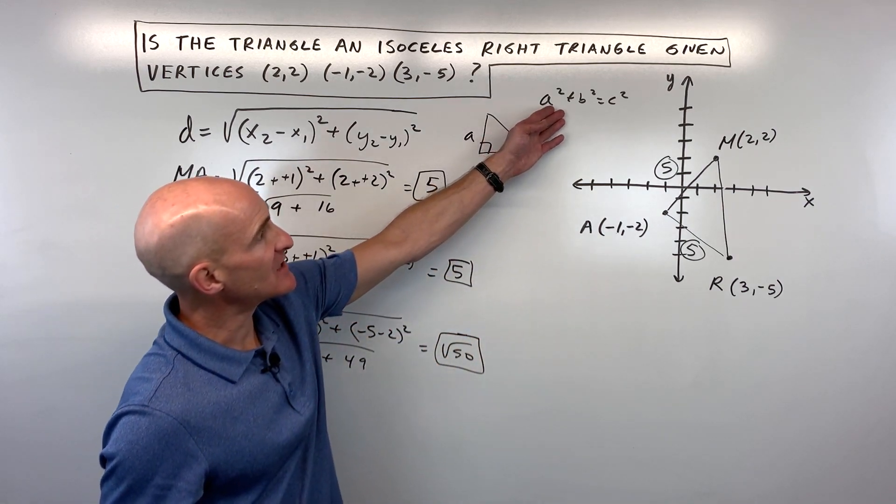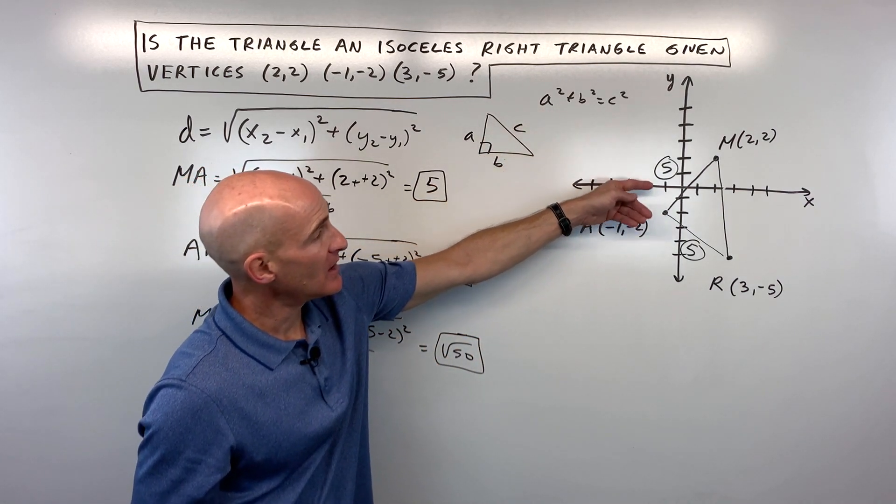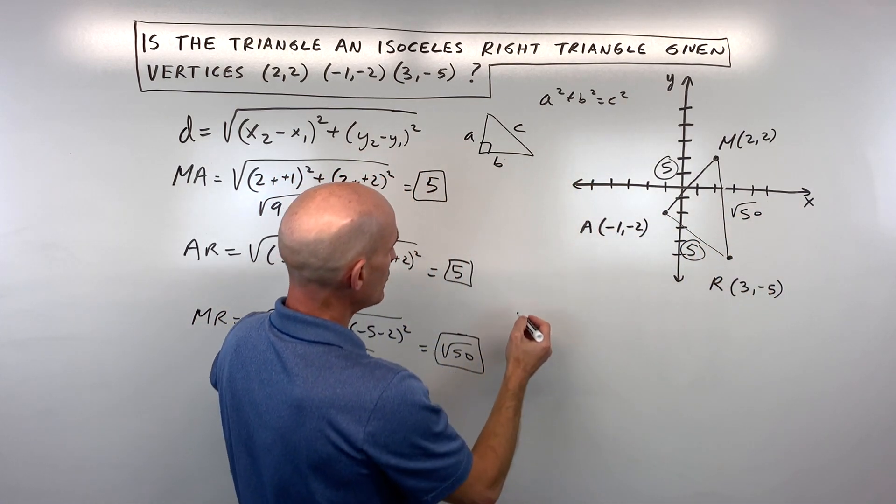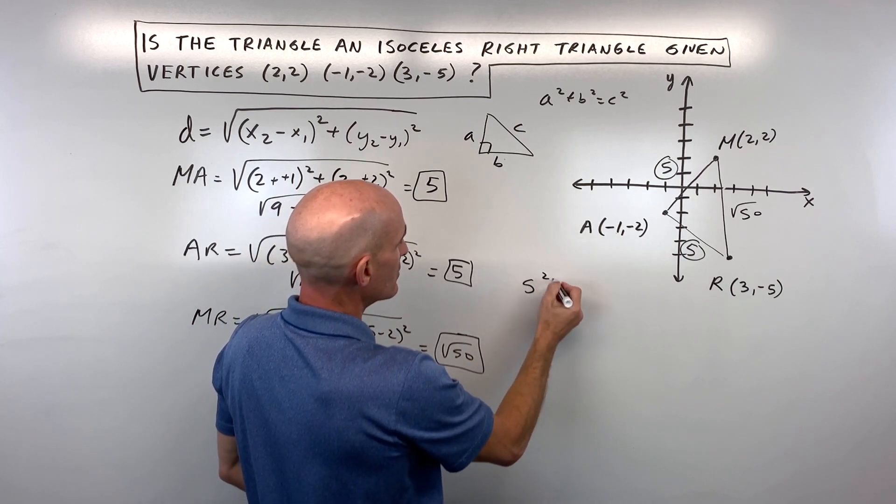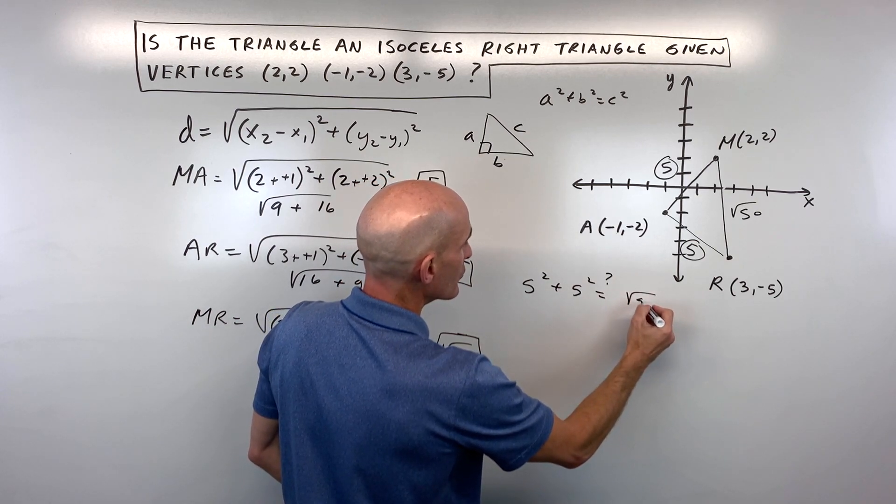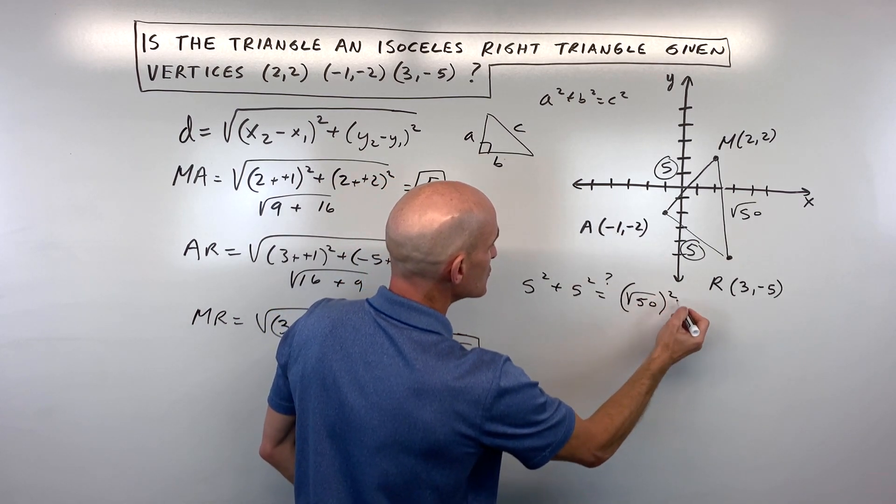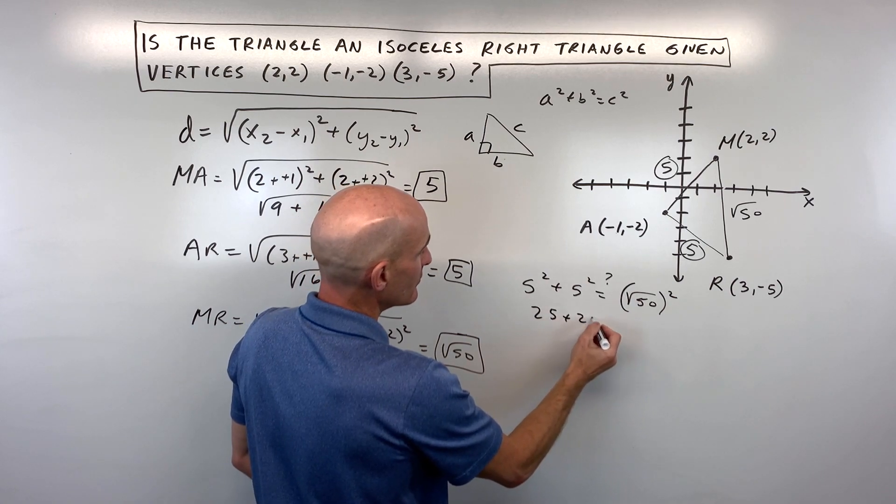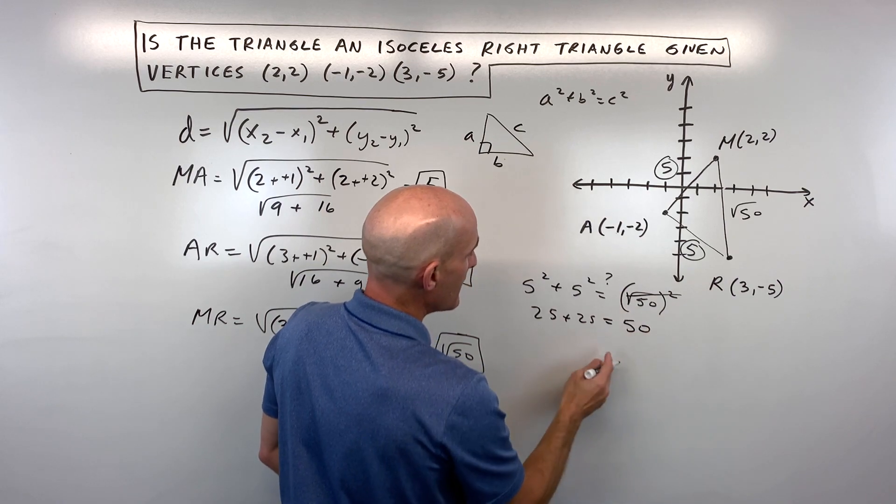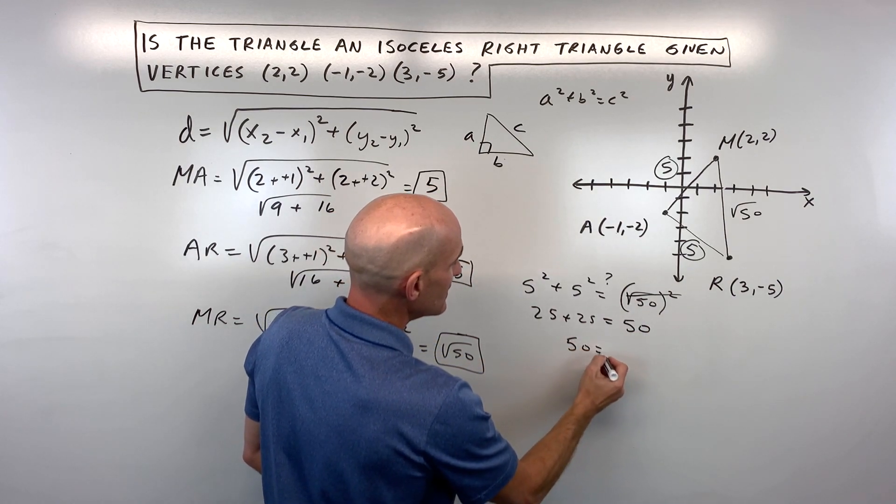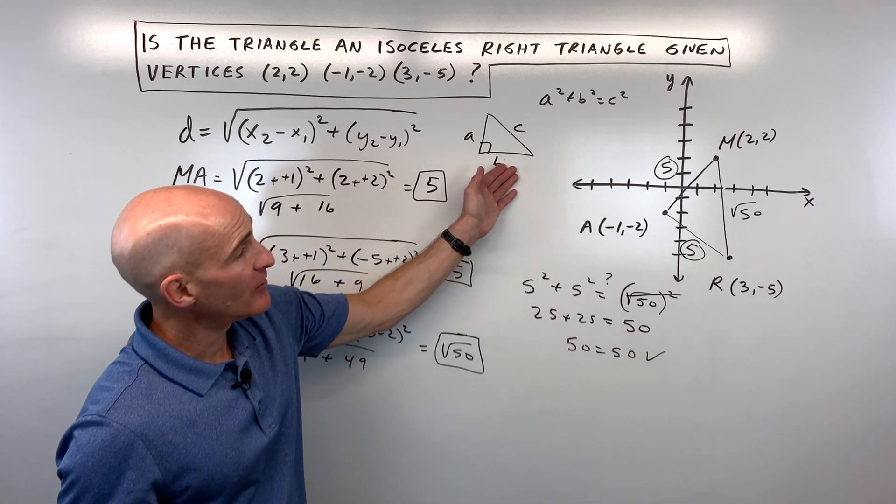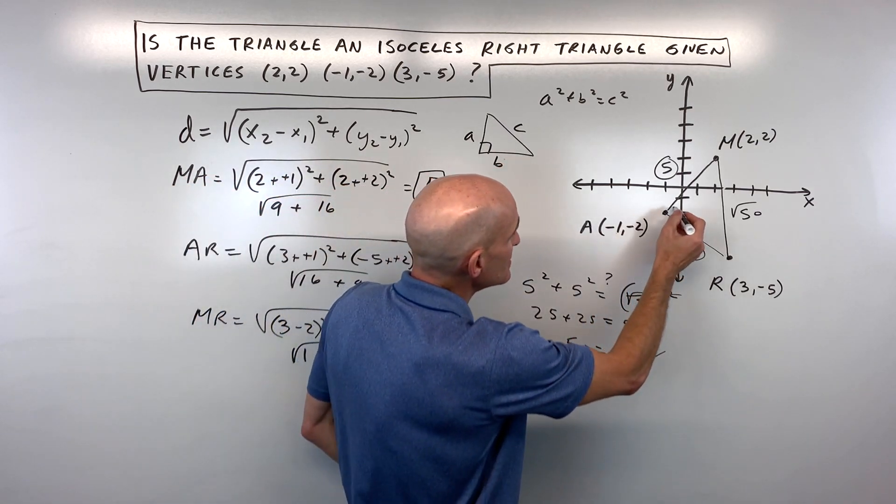What we're asking ourselves is: does this satisfy the Pythagorean theorem? Is a² + b² = c²? Let's double check: 5² + 5² equals (√50)²? 5² is 25 plus 5² is 25, and √50 squared—the square and the square root cancel—so we're getting 50 = 50. That tells us it satisfies the Pythagorean theorem, which means this is a right angle here.